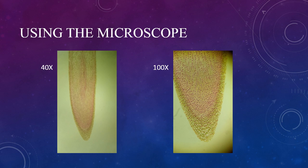Here we are looking at an onion root tip. Say the question we need to answer requires us to find examples of the different phases of mitosis. I would start by finding the tip of the onion root on the slide, then magnify until I could see the phases within the cells.